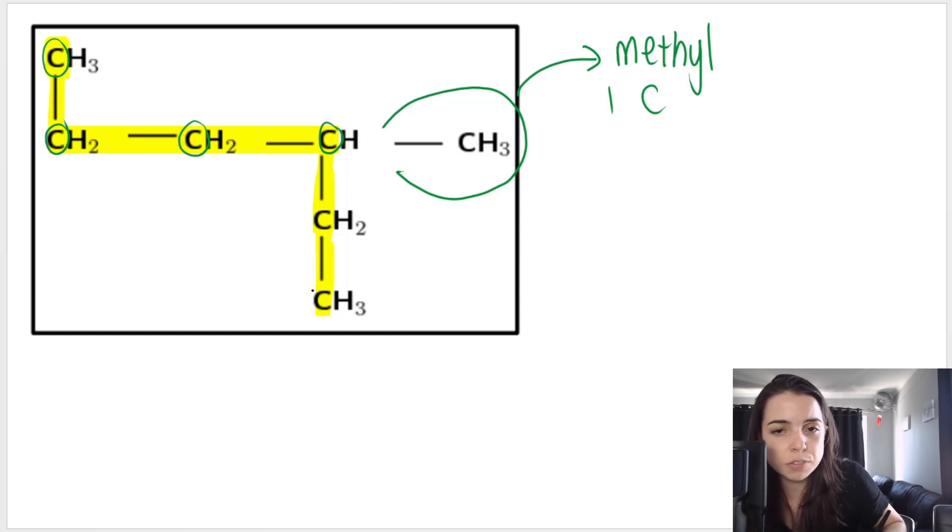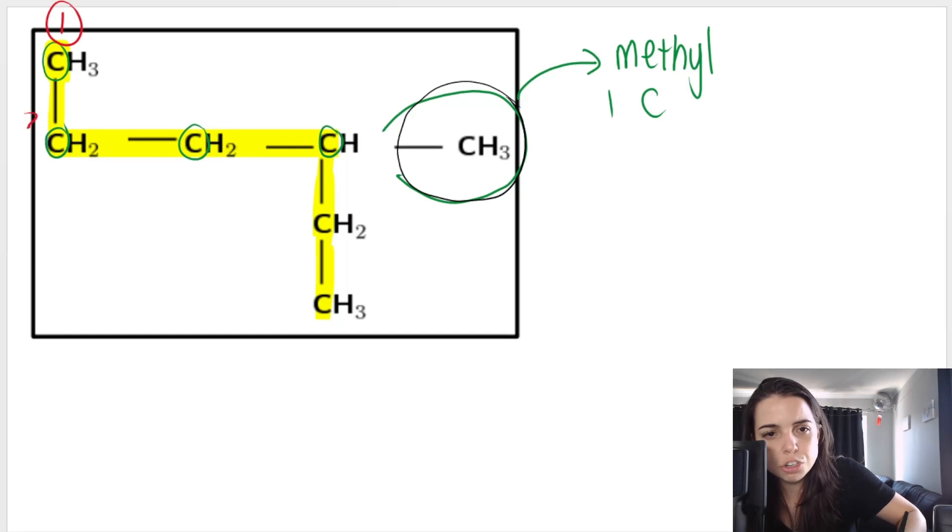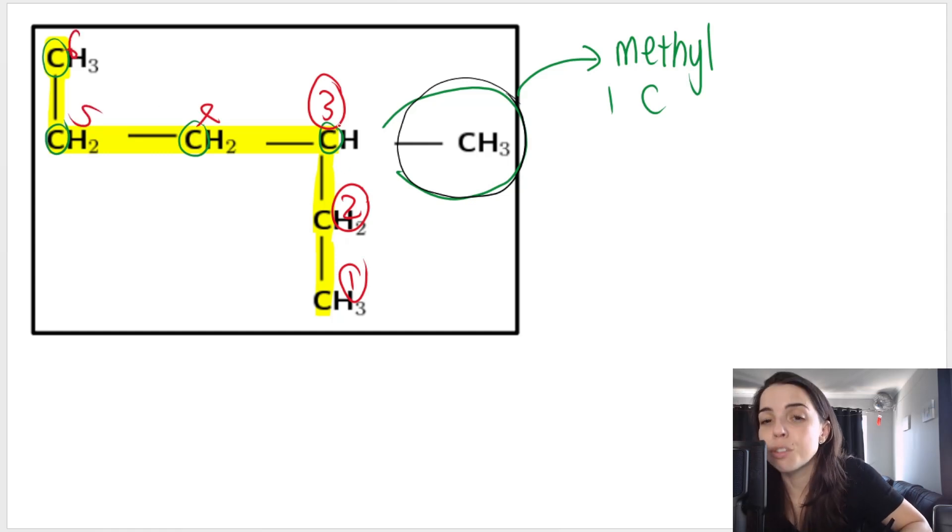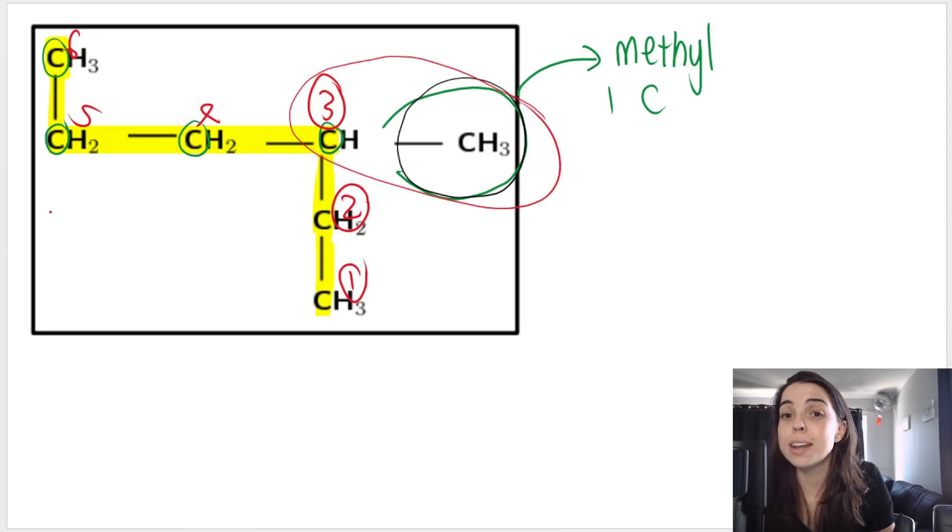So how do we name? Remember, as we did in previous videos, you need to number the carbon chain to make this methyl group have the lowest possible number. So we could number the carbon chain like this. This could be carbon one, two, three, four, five, six. However, if you notice, if you number the carbon chain the other way, so I started up here and I went down. If I started the other way like this, this is carbon one, two, three, four, five, six. That way of numbering is correct because it makes the methyl group be on the lowest possible carbon, carbon number three.